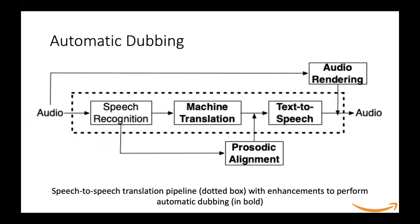A more formal automated dubbing pipeline is shown as follows. We start with the audio; the speech recognition engine converts this audio to text. The machine translation system then converts the source sentence to the target sentence of the dub language. The prosodic alignment module identifies the pause duration, speech duration, and phrase endings in the audio, as well as the corresponding phrases in the machine translation output. Finally, the text-to-speech system takes all these factors into account to generate audio in the target language.